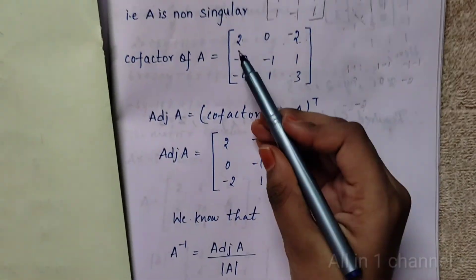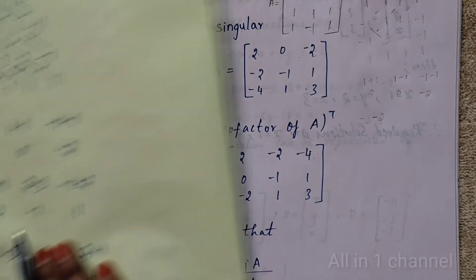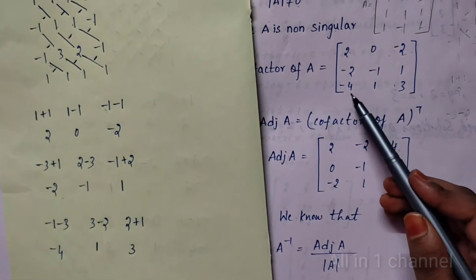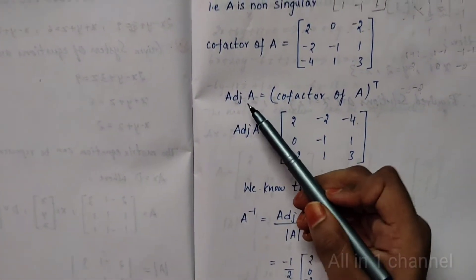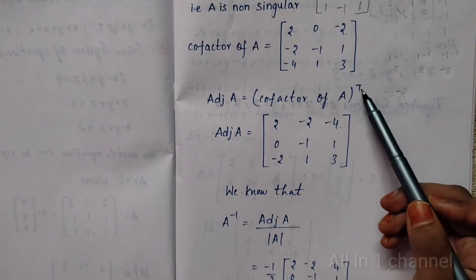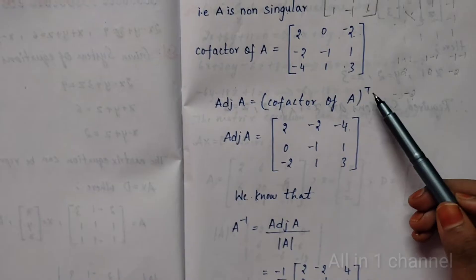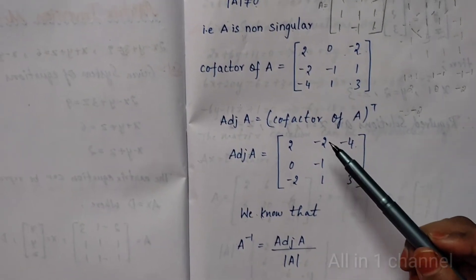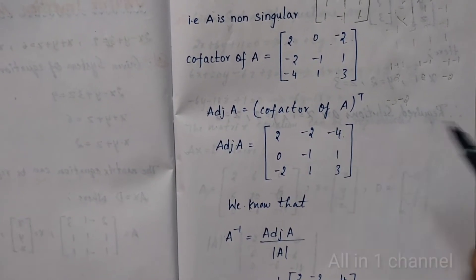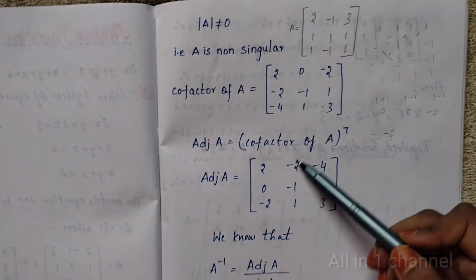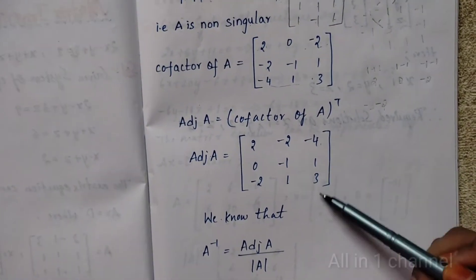The cofactor matrix of A is: [2, 0, -2; -2, -1, 1; -4, 1, 3]. Now find adjoint A. Adjoint A equals the cofactor matrix of A, whole transpose. So rows convert into columns: first row becomes first column, second row becomes second column, third row becomes third column.